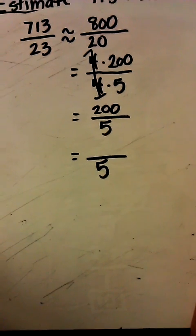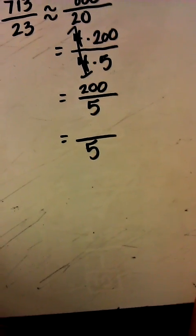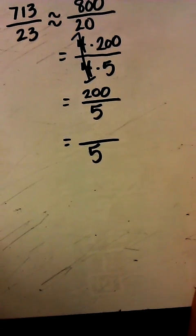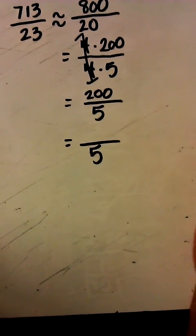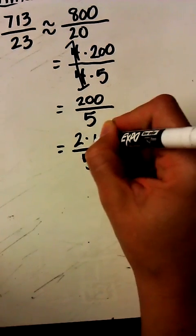So ideally I would have a factor of 5 there. But say I can't think of 5 times what equals 200. I can just decompose 200 in a way that does come to mind for me. Say 2 times 100.